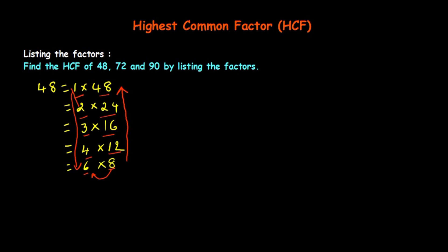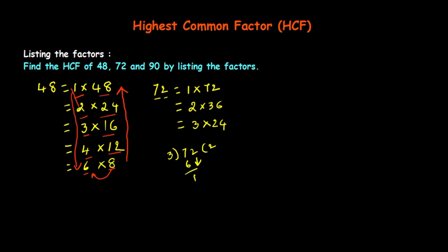Now let's find the factors of 72. We write 1 × 72 and 2 × 36. Is 3 a factor? 7 + 2 = 9, which is a multiple of 3, so yes. That gives us 3 × 24. You can verify by dividing: 3 into 72 gives 24 with remainder 0, confirming 3 is a factor of 72.